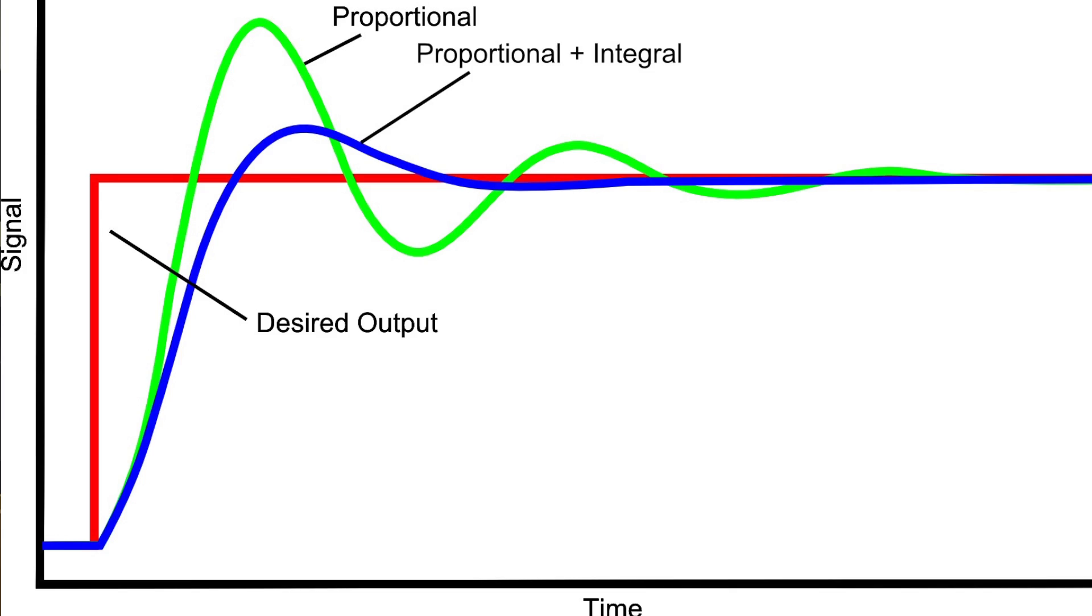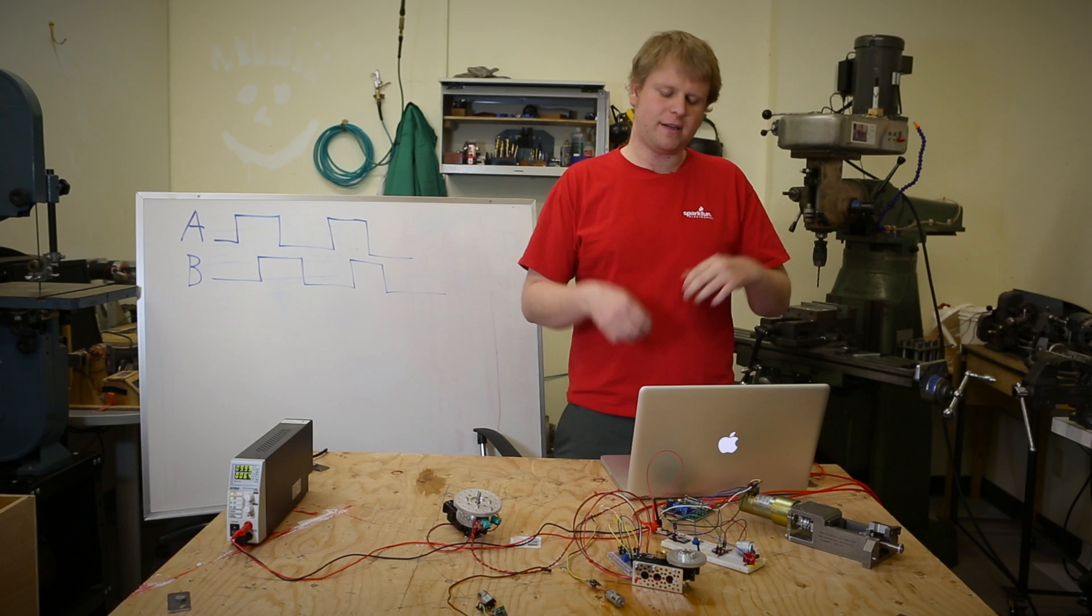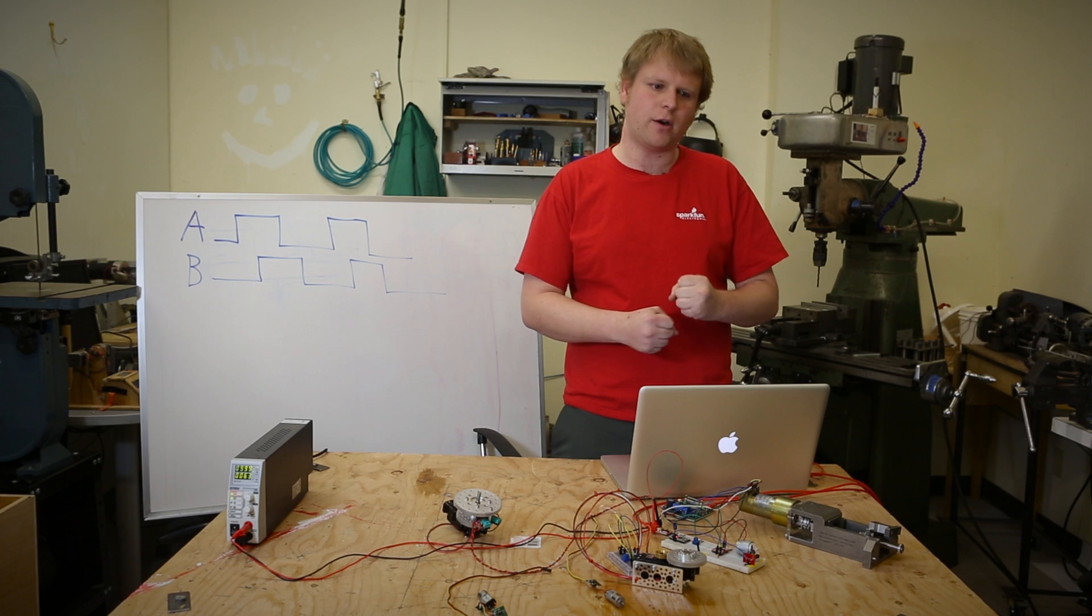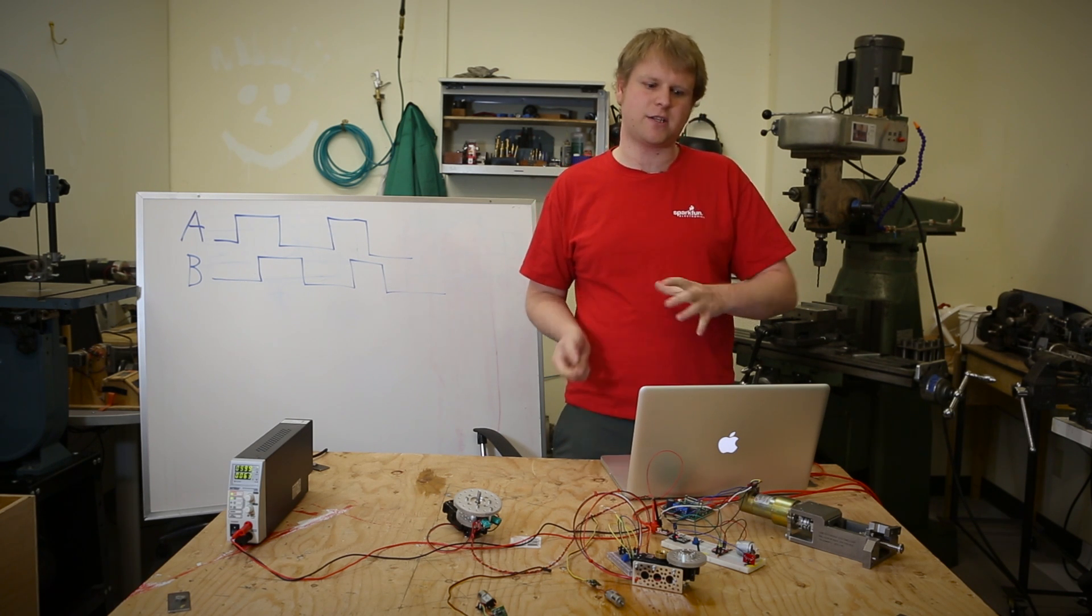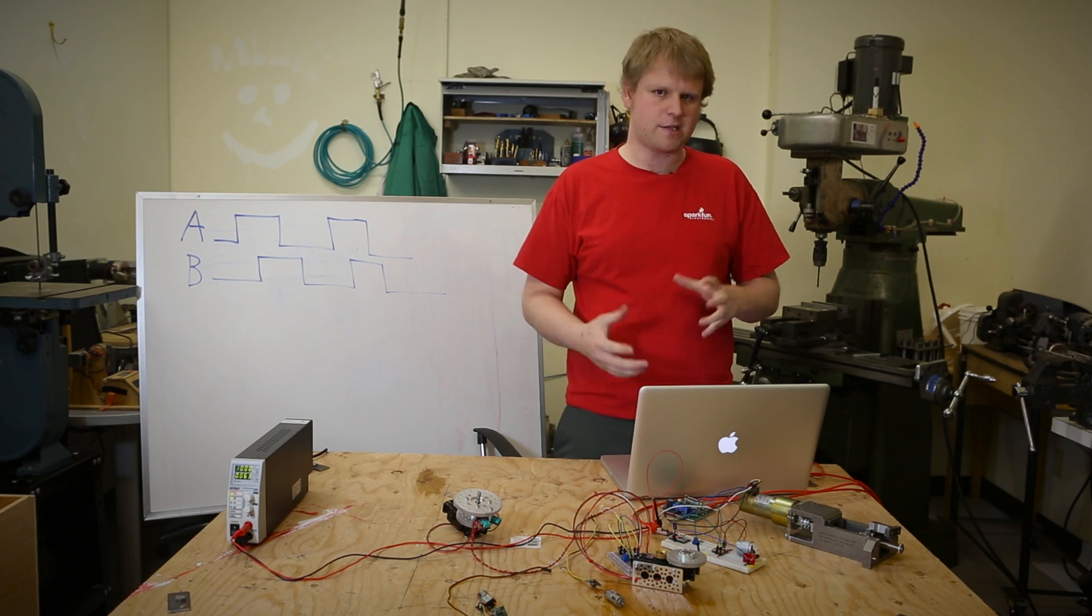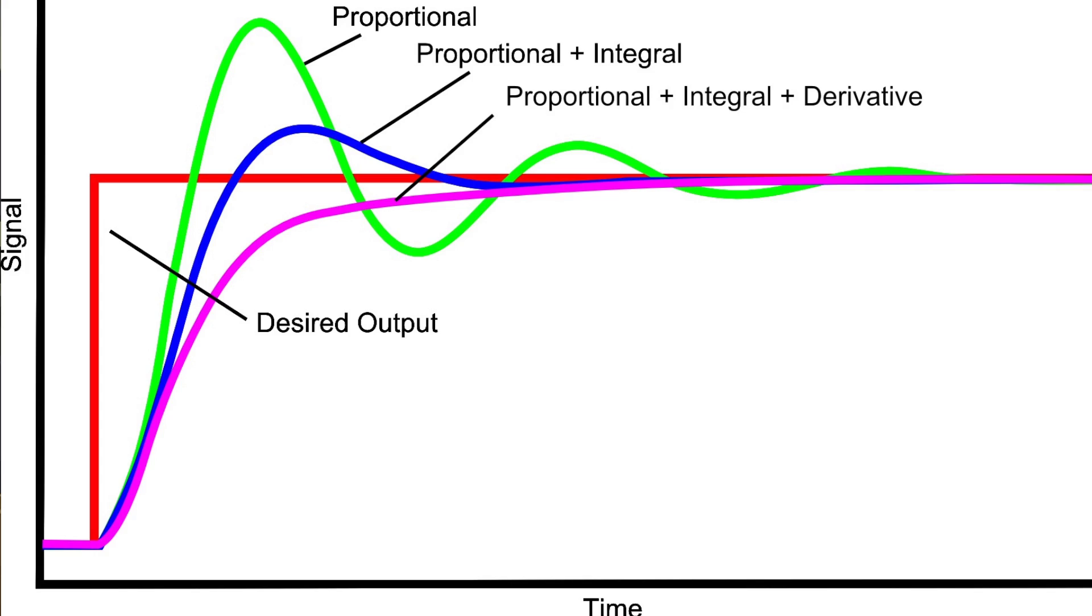But the downside to an integral term is you can get something called integral windup, where if you hold on to a motor and it's trying to hunt for its spot and you let go, it's going to rocket ship until it tries to get to its position, which in some cases is quite dangerous. Finally, there is this segment called the derivative, and it's how fast are we headed towards our target goal. For most of the applications that I use, I'm looking mostly at the P and I terms of a control loop, and D is only used for final smoothing.